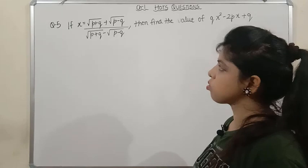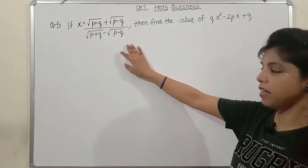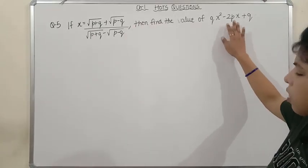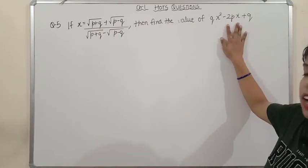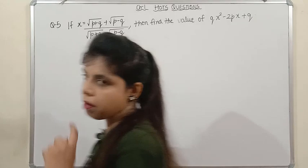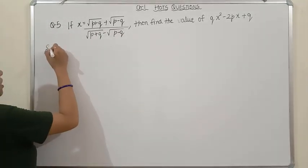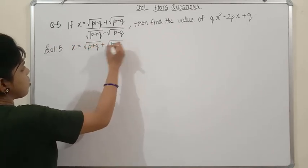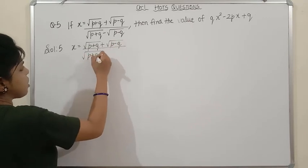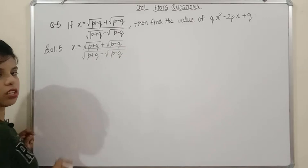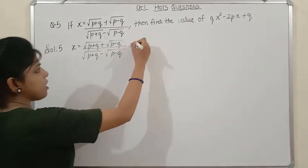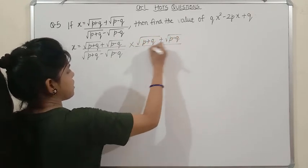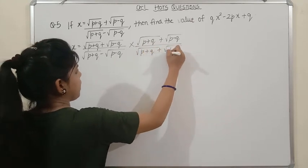Question 5 is a more complicated question. Given x = (√(p+q) + √(p−q)) / (√(p+q) − √(p−q)), find the value of qx² − 2px + q. First, we simplify x by rationalizing — since the denominator has a minus, we multiply and divide by (√(p+q) + √(p−q)).